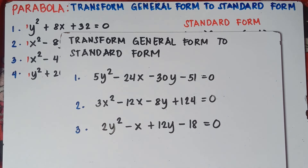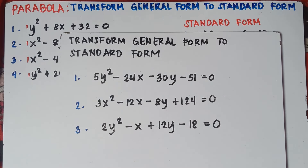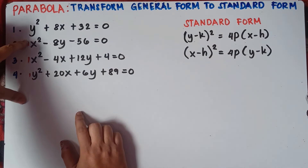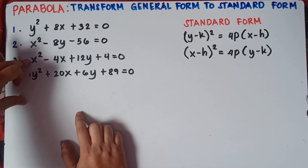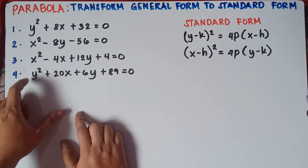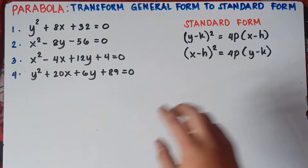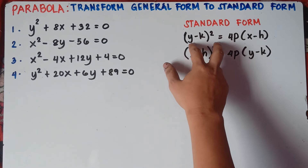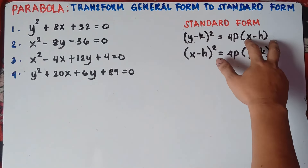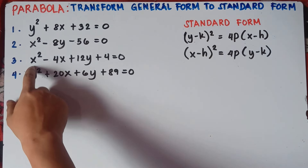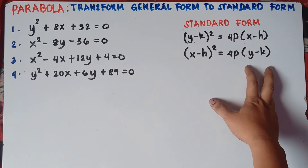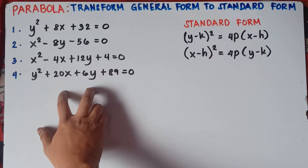So what would we do if we have this kind of example? I will just put the link in the description down below for Part 2 of our video. Let's focus first on Part 1. Understood, class: if you see a variable without any number, the number before that variable is 1. The standard form of the parabola — if you have y-squared, your equation is: quantity (y minus k) squared equals 4p times quantity (x minus h). If you have x-squared, it is: quantity (x minus h) squared equals 4p times quantity (y minus k). So let's transform these into standard form, starting with number 1.